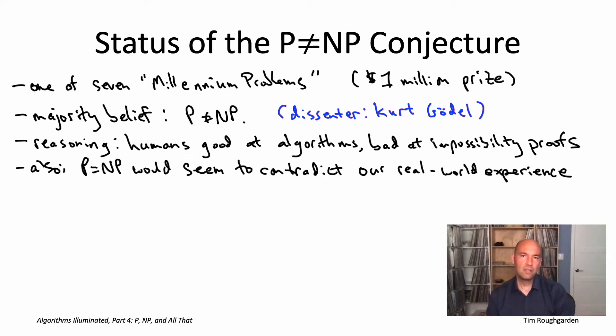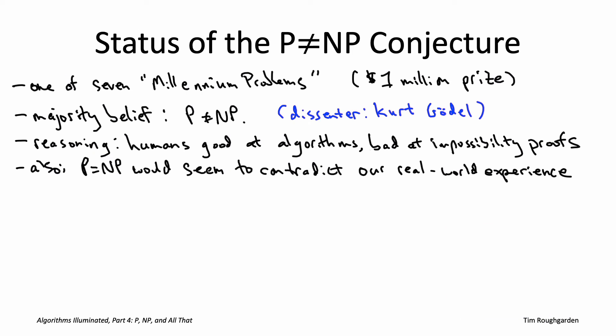In 1956, Gödel conjectured something equivalent to P equals NP. In 1967, Edmonds conjectured something equivalent to P not equal to NP. Which of them is right? You'd hope that as the years go by we'd be getting closer to a resolution.